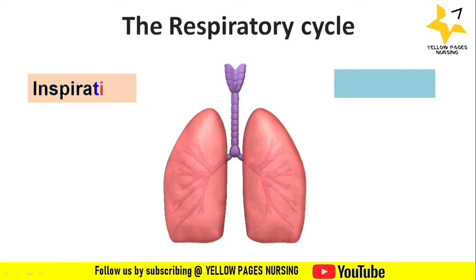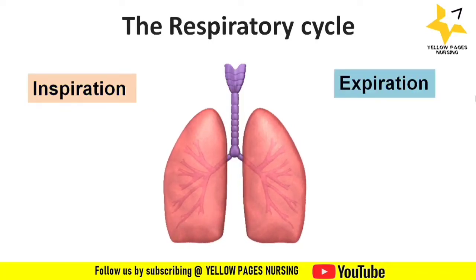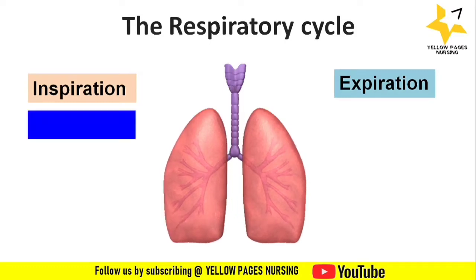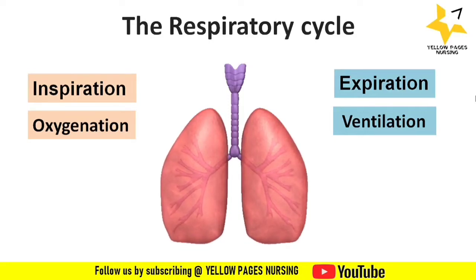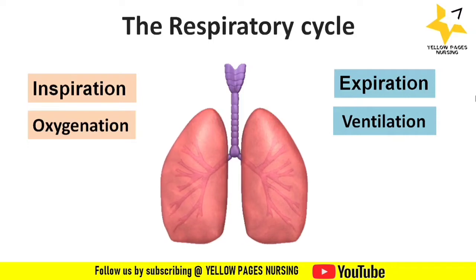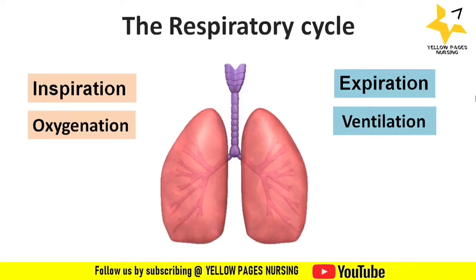The respiratory cycle consists of two components: inspiration and expiration. There are two concepts — oxygenation and ventilation. These two are entirely different mechanisms, but they both rely on the respiratory cycle. Oxygenation relies on the inspiratory phase, whereas ventilation relies on the expiratory phase.